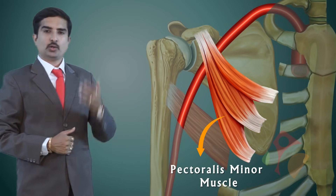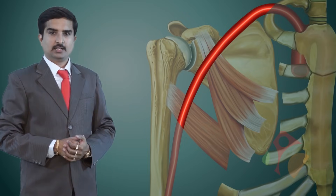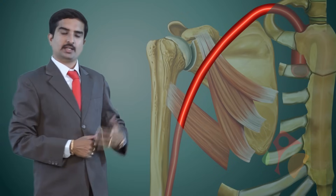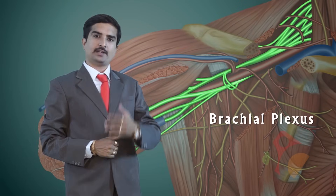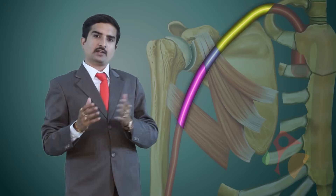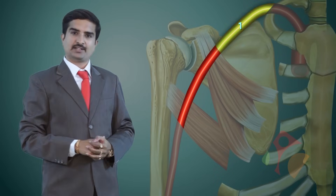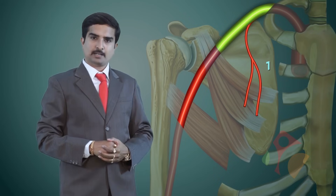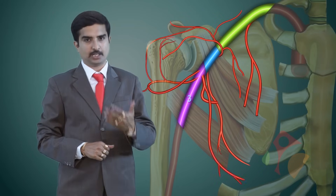Regarding the overall relations of the axillary artery in the axilla, medially throughout its course it is related to the axillary vein, but the course of the brachial plexus and its branches differ in each part. Each part of the axillary artery gives off different branches: the first part gives off one branch, the second part gives off two branches, and the third part gives off three branches.